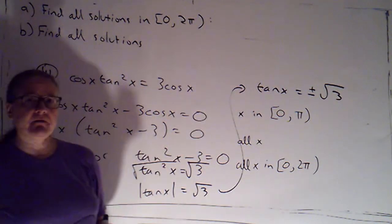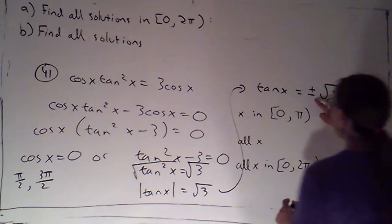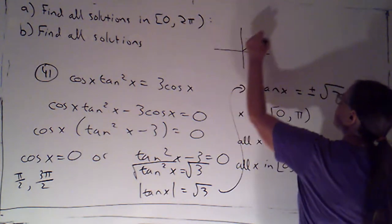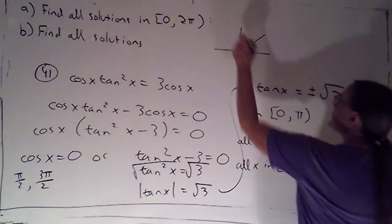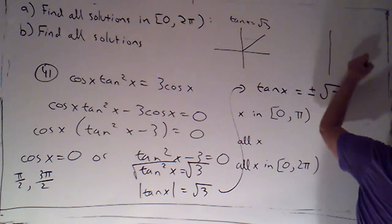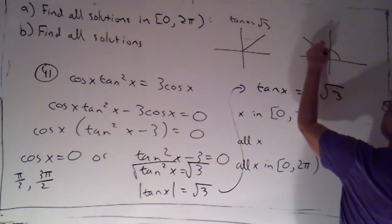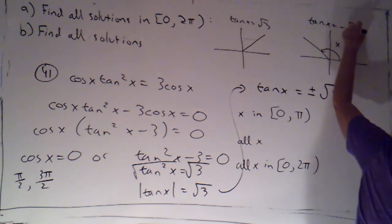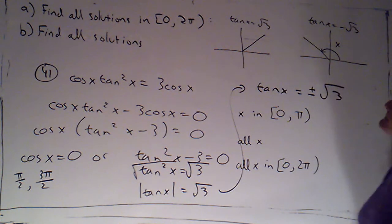So, what's kind of interesting is because this is plus or minus, and this corresponds to quadrants one and two, I'm going to have two solutions. In quadrant one, I'm going to have a solution to tangent of x equals positive root 3. And in quadrant two, I'm going to have a solution to tangent of x equals negative root 3.